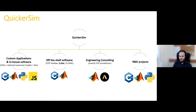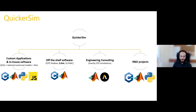In QuickerSim we have four main fields and project types. First and most important is custom applications and in-house software, mainly focused on graphical user interfaces created using GUIDE, App Designer, and JavaScript. There are also tailored numerical models, which is our core skill, as well as numerical libraries and web applications we've been developing in recent years.